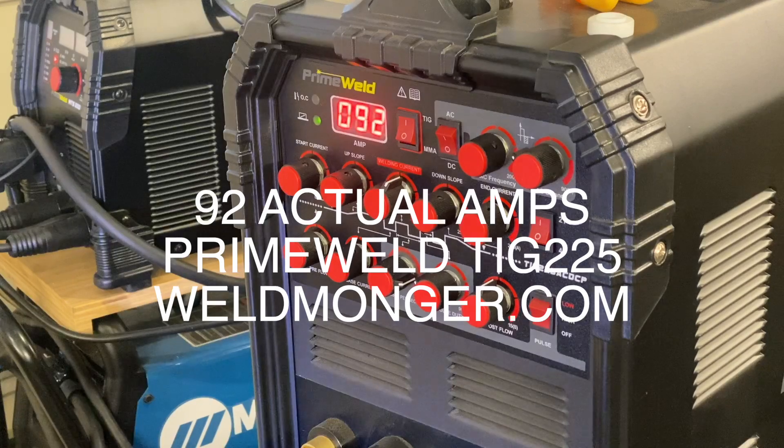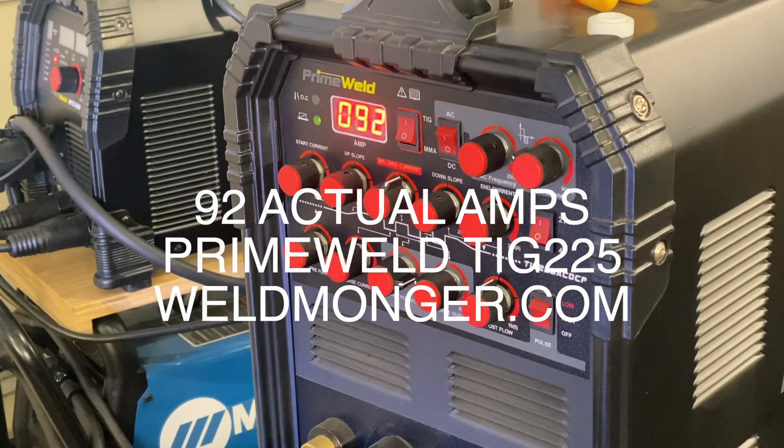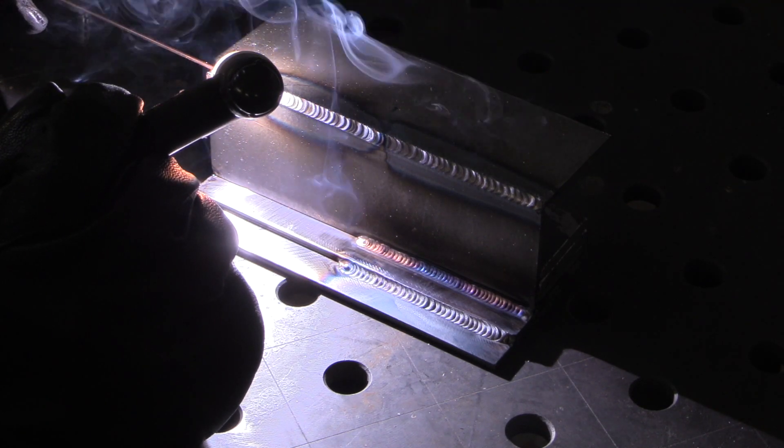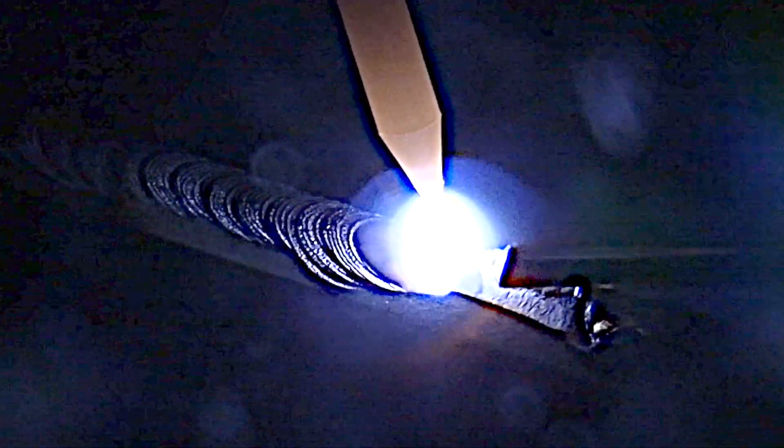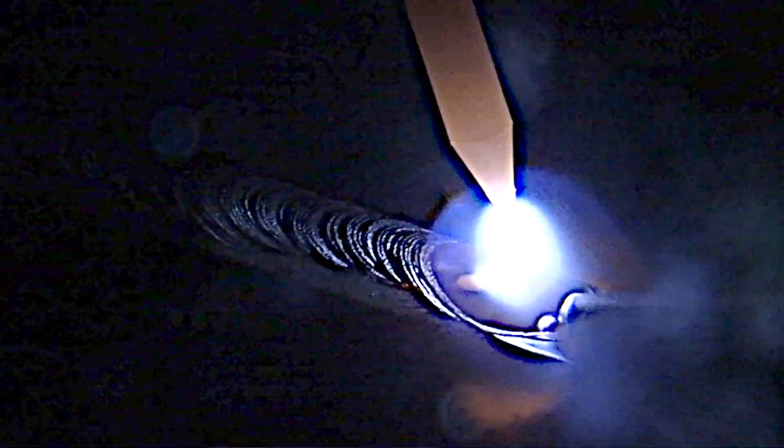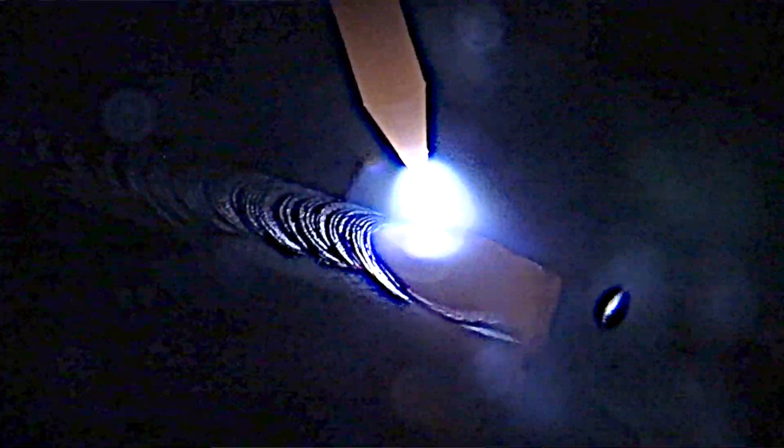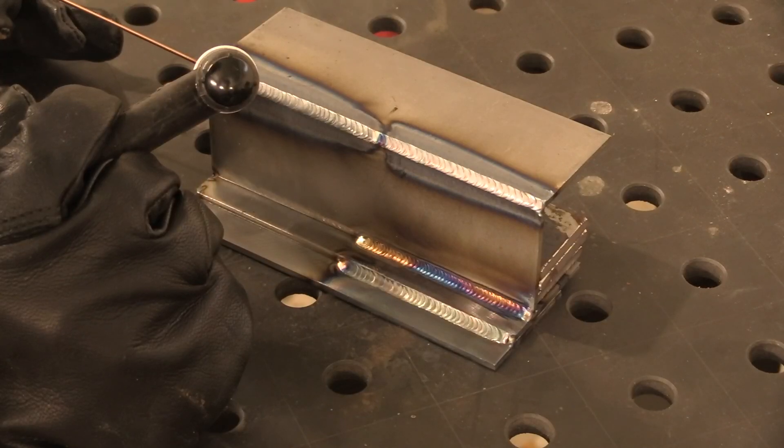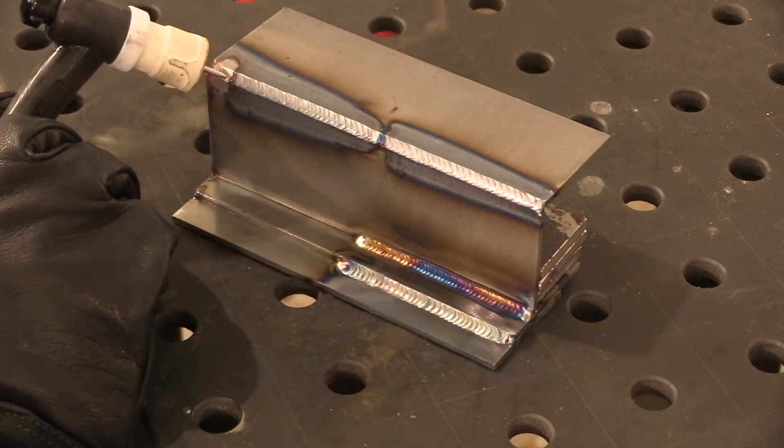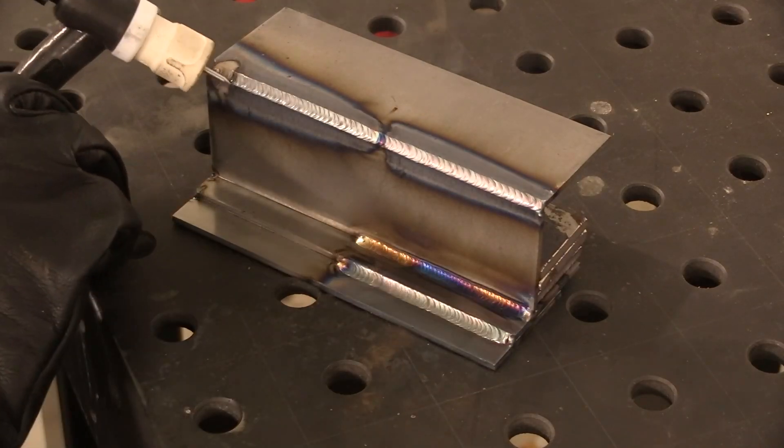We'll show it again on each joint so you'll get a chance to see plenty of restarts. Coming up to the end here, I'm keeping a real close eye on that puddle and backing off the amperage a little bit, tapering off amperage and bringing that puddle back in again. That's just the way I do it. Many different ways. Next will be the lap joint and we'll do a restart there too.